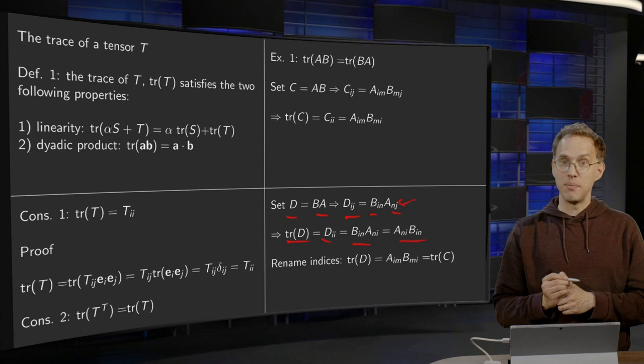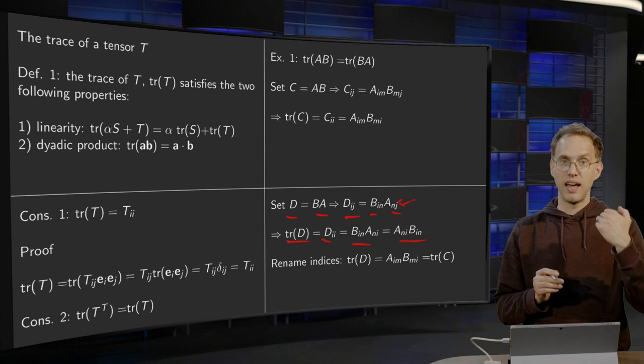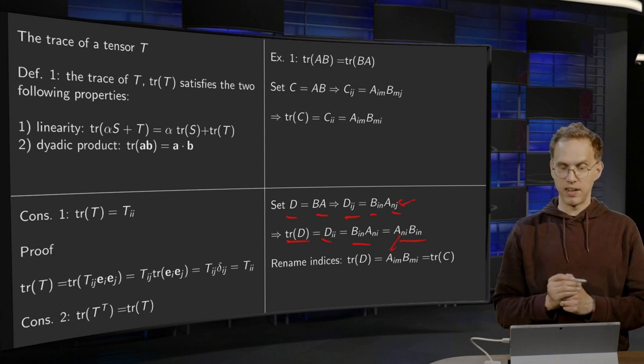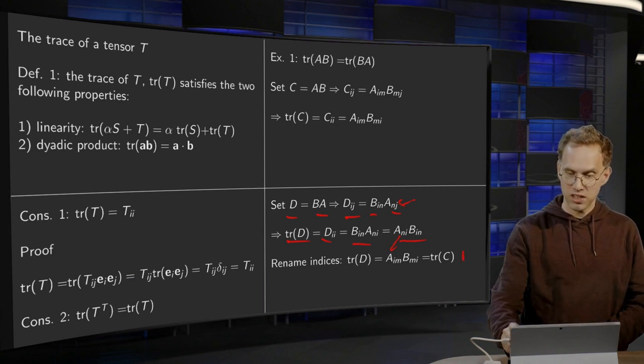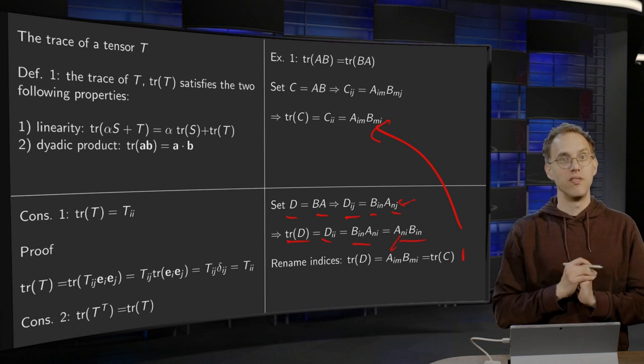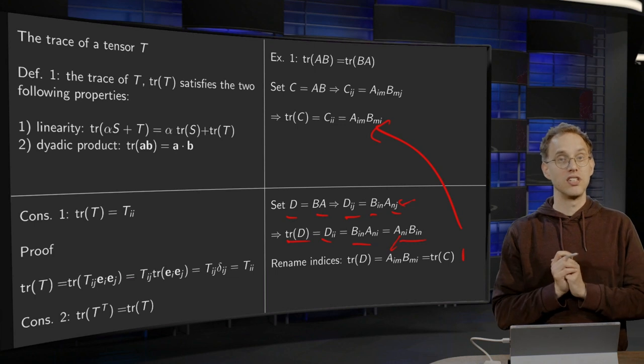Now we can rename indices, because we are summing over both n and i. So we can rename the n to i and the i to m. That's what we do over here. Then we get AimBmi, and we see that this is indeed exactly equal to the trace of C. So now we see that indeed the trace of A times B equals the trace of B times A. So trace for a tensor satisfies the same properties we know from linear algebra.